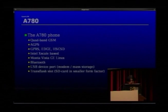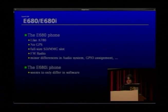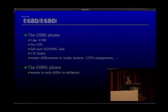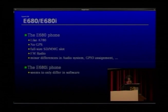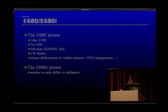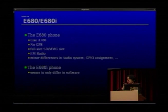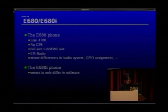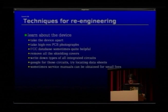The E680 is almost identical to the A780, but doesn't have GPS. It has a full-sized SD/MMC card slot and an FM radio — I don't know why they removed it in the A780. It has minor differences in the audio subsystem and some GPIO pin assignments are different, but it's essentially the same hardware and software. The E680i is basically an E680 with a more current firmware — you can flash E680i firmware onto an E680, which is what I'm running here, and it works perfectly.